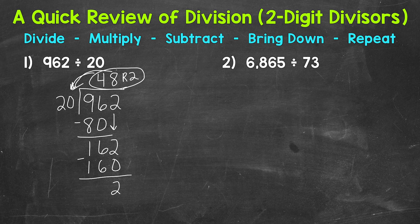Let's move on to number 2, where we have 6,865 divided by 73. So we are dividing 6,865. That's our dividend. It goes under our division bar. And we are dividing by 73. 73 is our divisor. Now we go through our steps. So we start with divide.